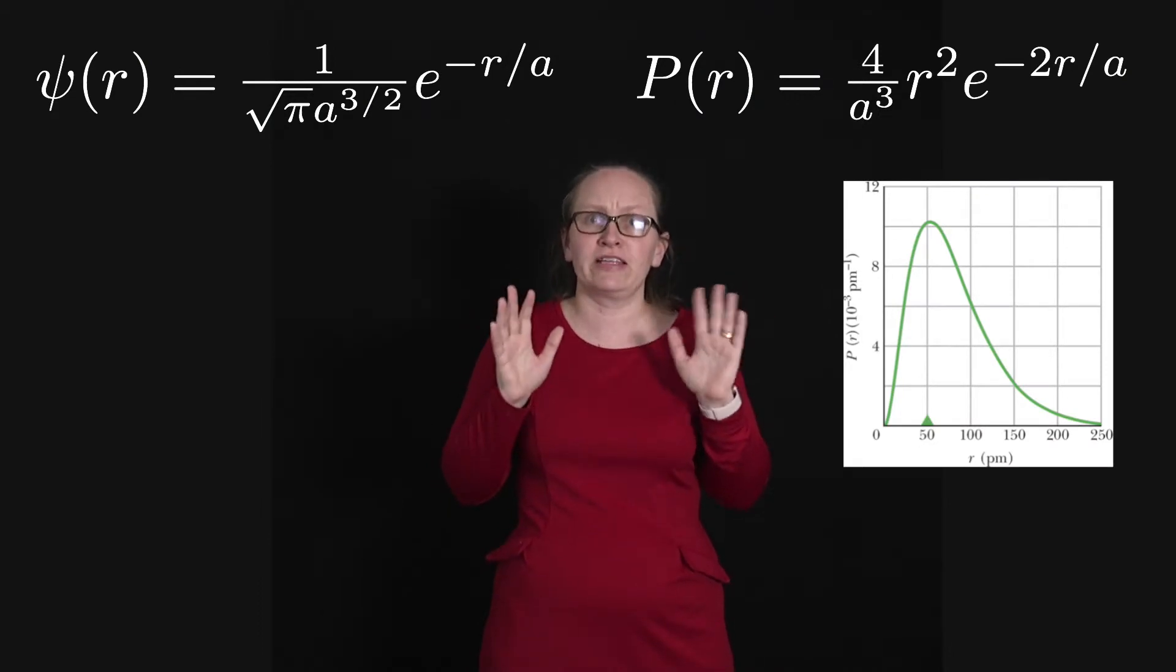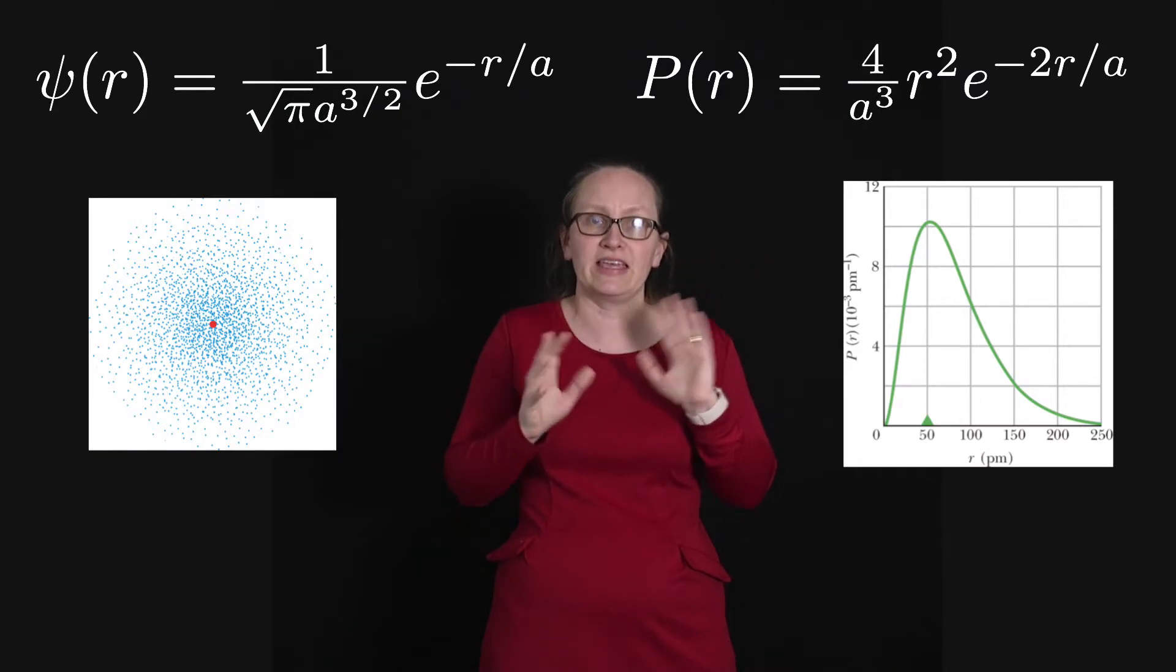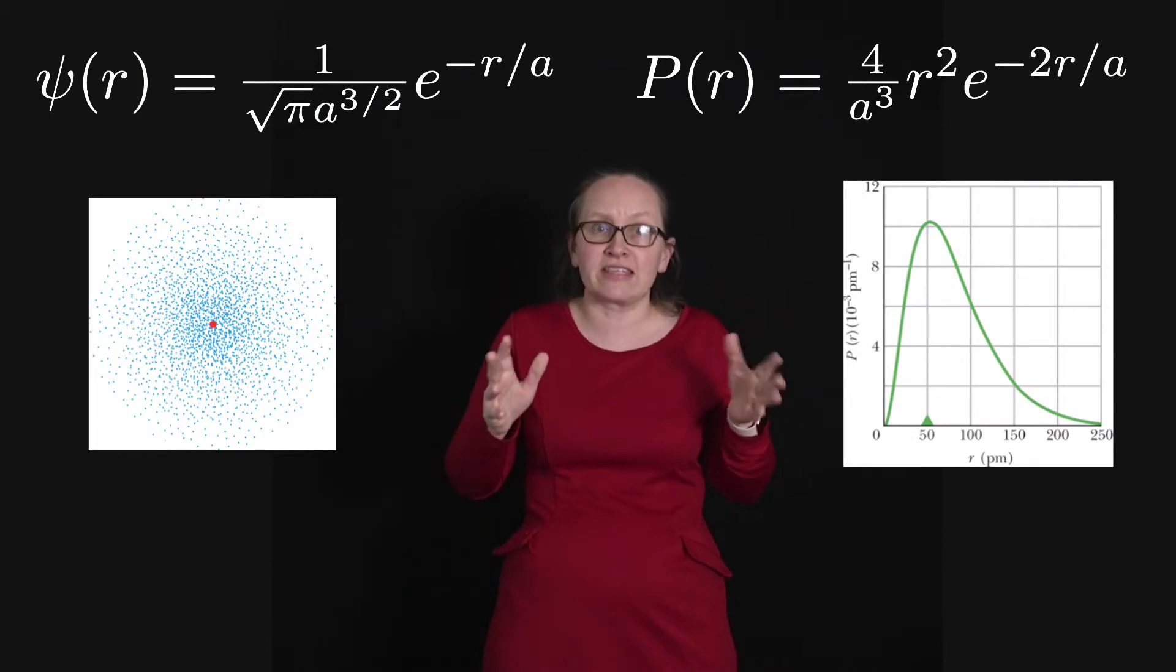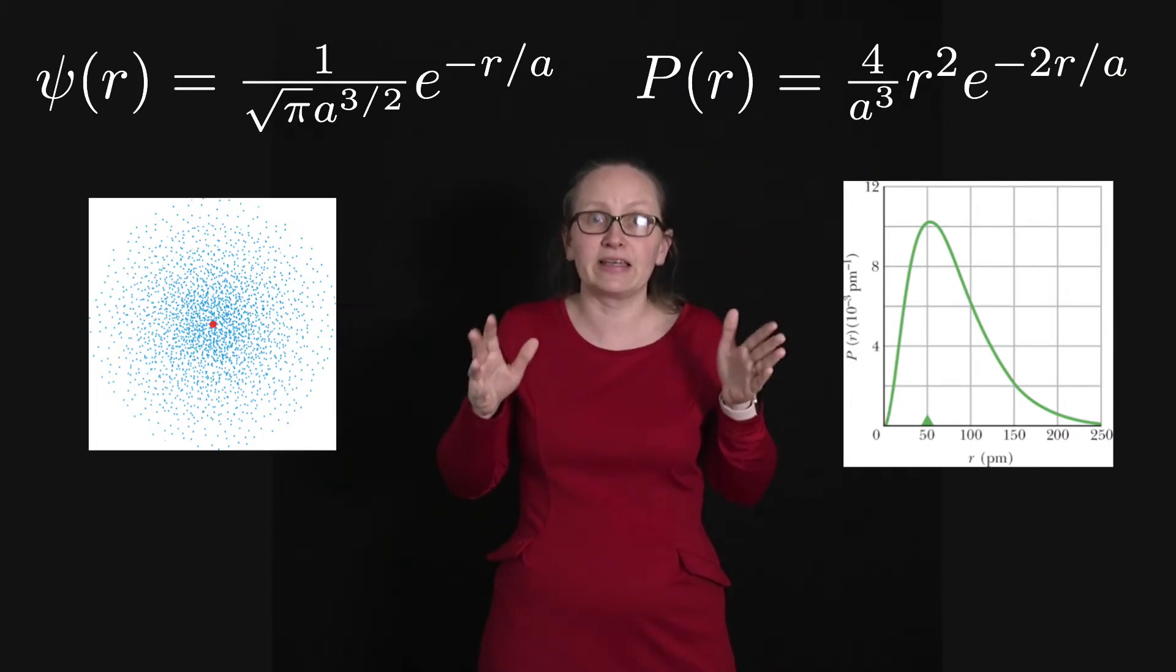So if we draw a little graph showing dots of where the electrons are most likely to be found, for this ground state with n equals 1, l equals 0, and ml equals 0, we end up with a graph like this.